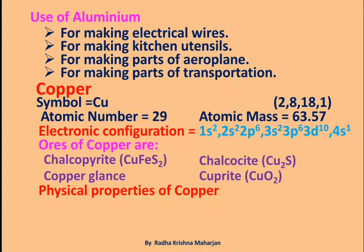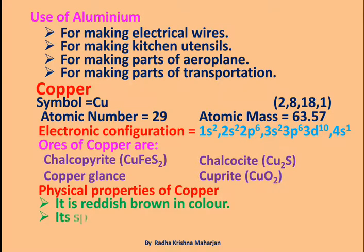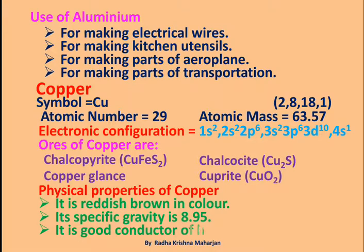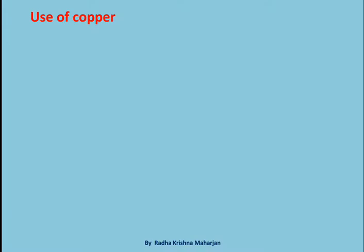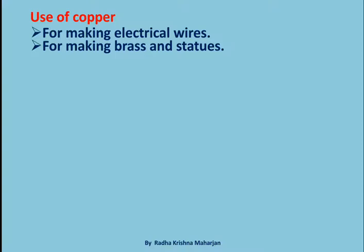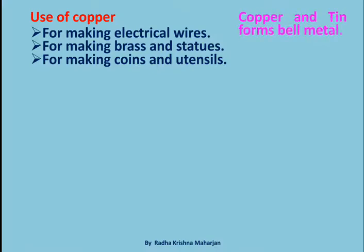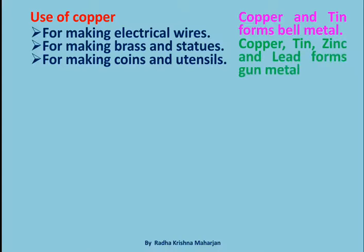Physical Properties of Copper: It is reddish-brown in color. Its specific gravity is 8.95. It is a good conductor of heat and electricity. Uses of Copper: for making electrical wires, for making brass and statues, for making coins and utensils. Copper and tin form bell metal; copper, tin, zinc, and lead form gun metal.